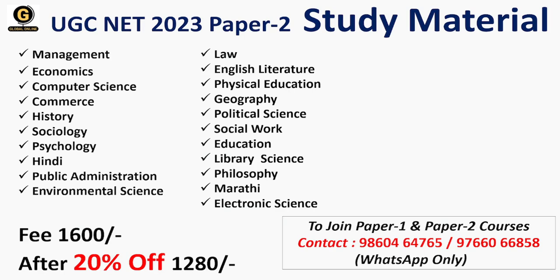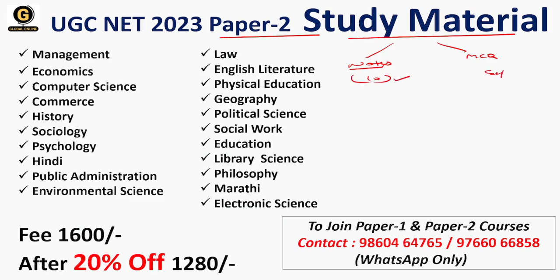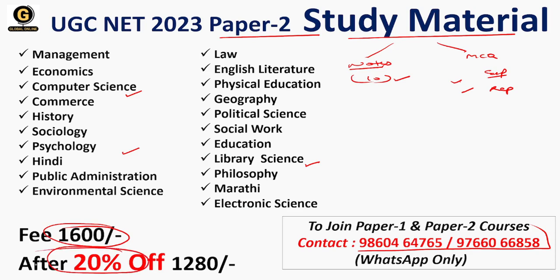NTA UGC NET 2023 के Paper 2 preparation के लिए complete study material हमने लाया है जो कि exam के difficulty level और pattern को ध्यान में रखते हुए बनाया गया है। इसमें full syllabus notes और MCQ series provide होती है — total 10 units cover होते हैं। यह आपको exam के साथ-साथ interview qualify करने में भी मदद करेगा। WhatsApp की मदद से screen पर दिए किसी भी number पर contact करें। Fee 1600 रुपीज है लेकिन आज flat 20% off यानि सिर्फ 1280 रुपीज, जिसको आप lifetime use कर सकते हो।